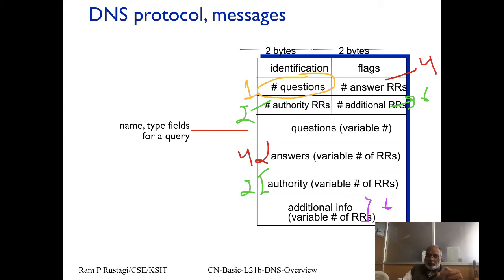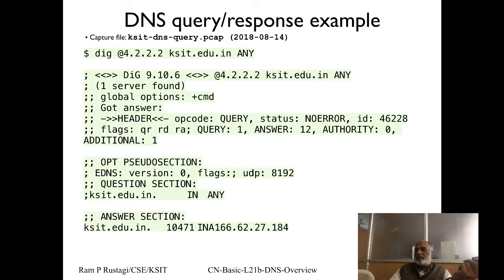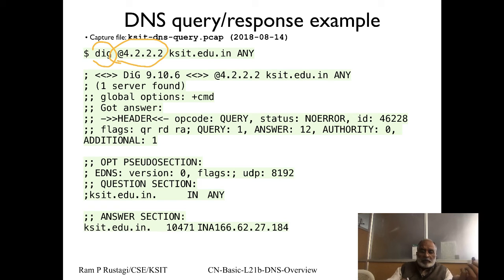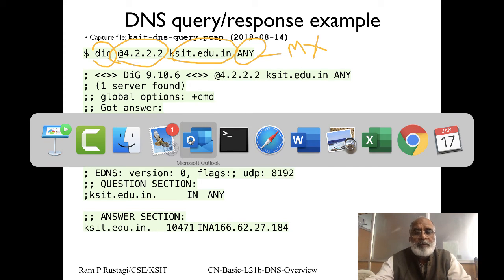The number-of-questions, number-of-answer-records, number-of-authority-records, and number-of-additional-records fields are counts only; the actual records appear after the fixed header. In a DNS request there will be only questions and no answers; in a response the questions are echoed along with the answers. You can use the 'dig' tool specifying a name server like 4.2.2, the hostname to resolve, and the record type. Using NS gives name servers, MX gives mail servers, and ANY returns all record types. A Wireshark capture can be run in parallel to analyze the packets.